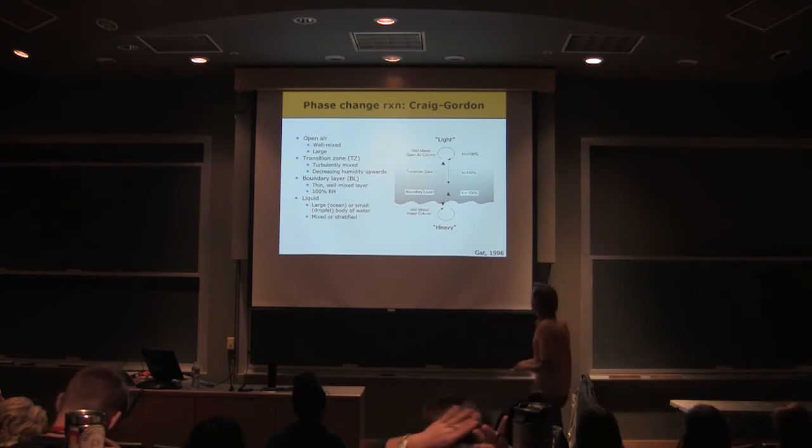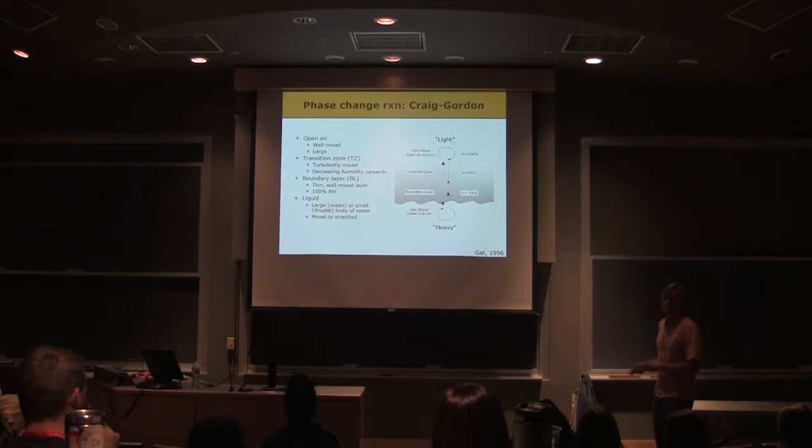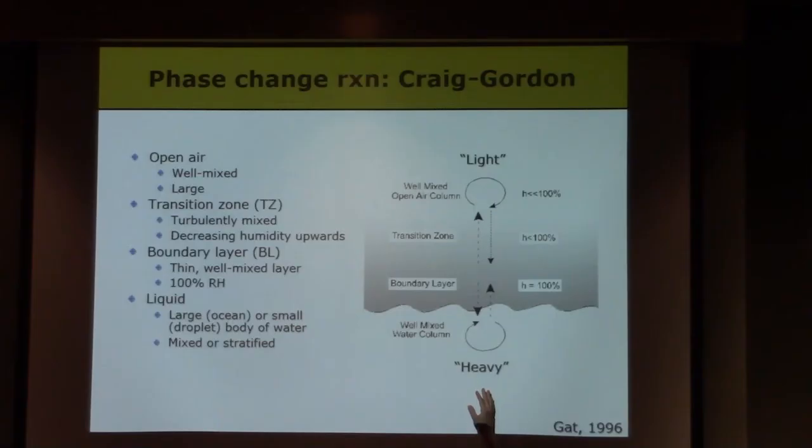Alright, so this is the system. This is the system that we're going to model here. It's the kind of conceptualization of the evaporating water body that's used in this model. And it subdivides the system into basically four parts. We have the water itself, the liquid water. And this model, I should say, was developed for the ocean, but it can be applied and has been applied to evaporation from pretty much any type of liquid water body. Alright, so we've got our water down here, liquid water, and it's evaporating into an atmosphere.